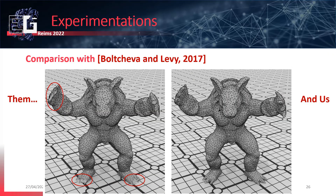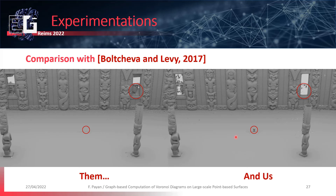Now, a comparison with the technique of Polcheva and Levy, which computes local Voronoi diagrams in 3D space. The results are pretty similar, but we globally observe that our approach tends to better preserve local details, as we work on the underlying surface and not in the ambient space. The same observation holds on Meeting House — our approach seems to better preserve local details.